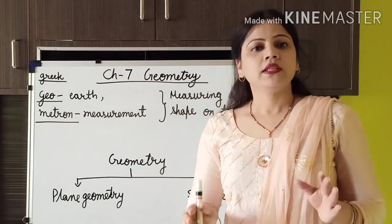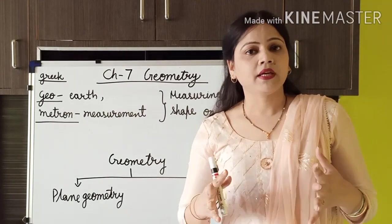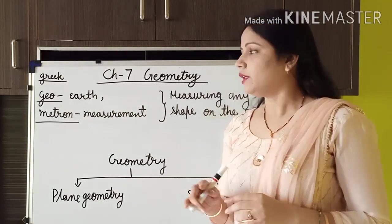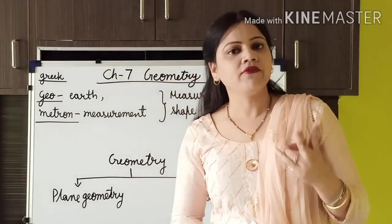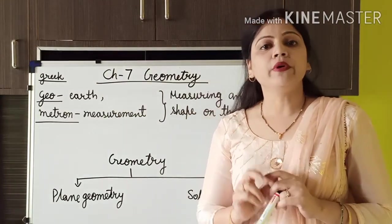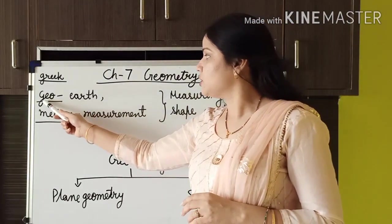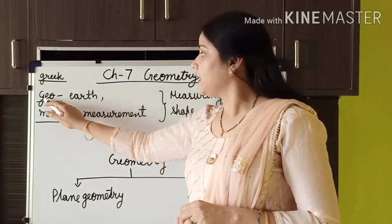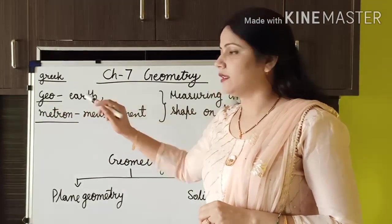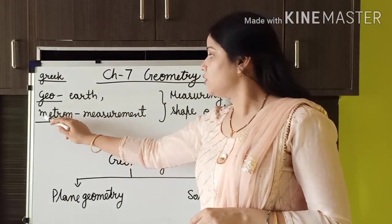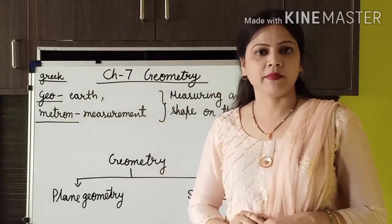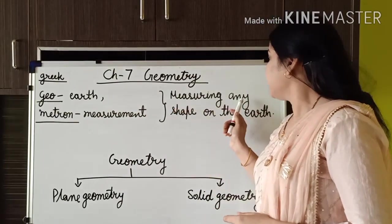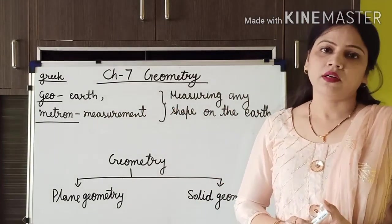This is a very new topic — Geometry. What do you mean by Geometry? Actually, Geometry is made up of two Greek words, that is Geo and Metron. Geo means earth, and Metron means measurement. So together it means measuring any shapes on the earth.